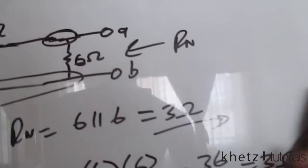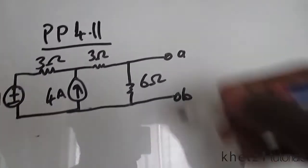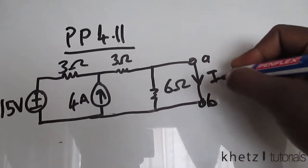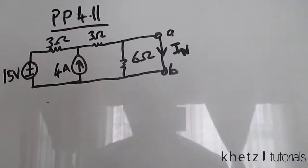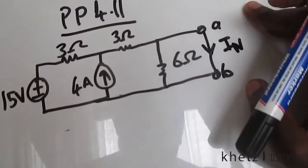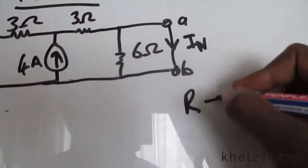So now we move on to find the Norton current, which is the short circuit current. So now this is a short circuit and the value of a short circuit is R equals to 0 ohms.